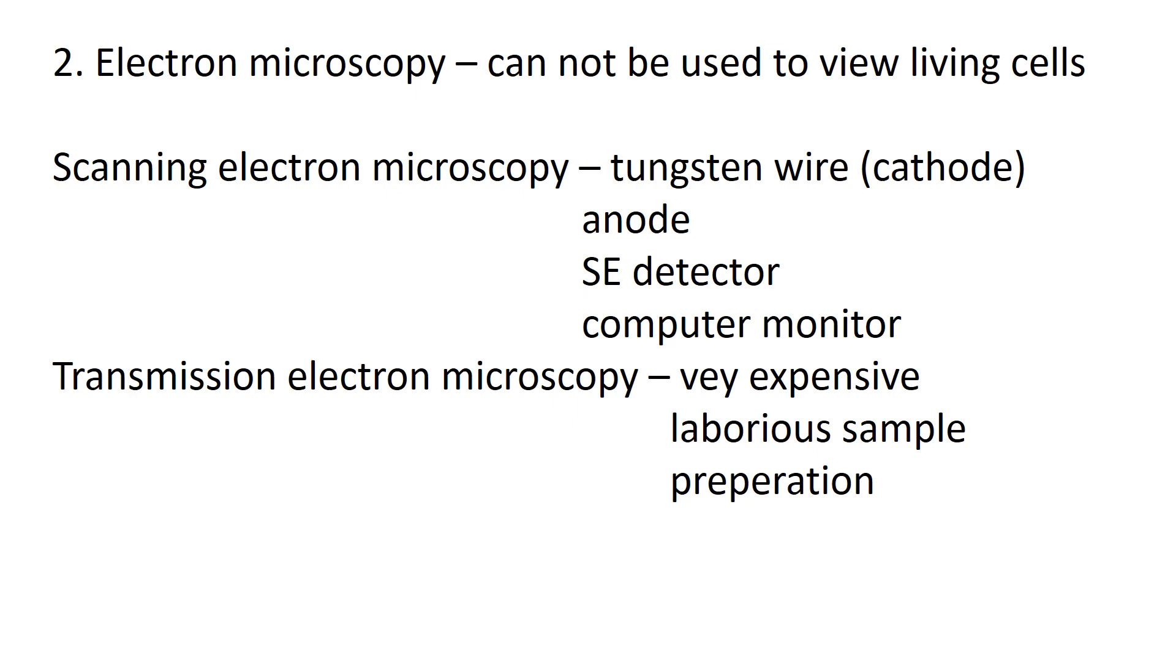Scanning electron microscopy uses a tungsten wire as cathode which releases electrons. There is a high electric field formed between this cathode and anode. An electron beam is directed to the specimen. The specimen gets excited and electrons escape from the outer shell. This escaped electron is detected by an SE detector and transferred to a computer monitor.